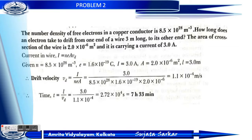The area of cross section of the wire is 2 into 10 to the power minus 6 meter square, and the wire carries a current of 3 ampere. We know the relationship between current and drift velocity: I equals N E A V_D.